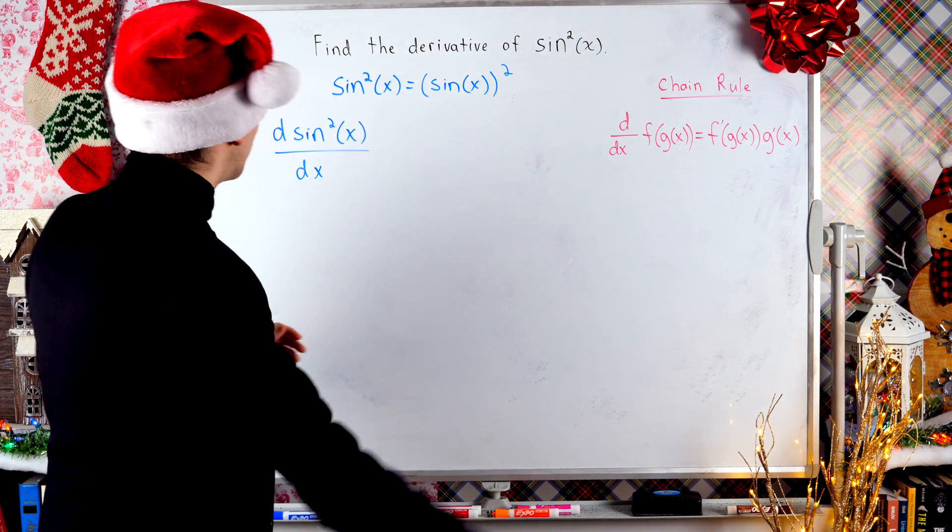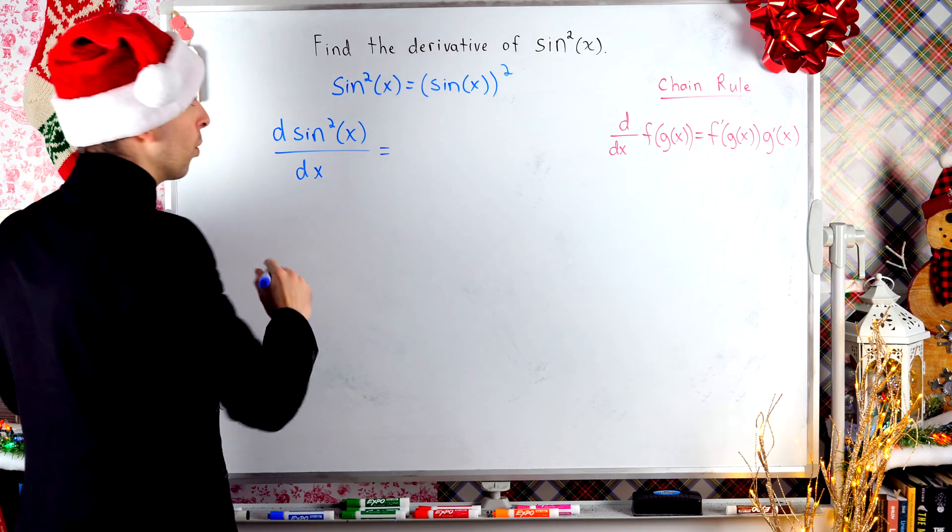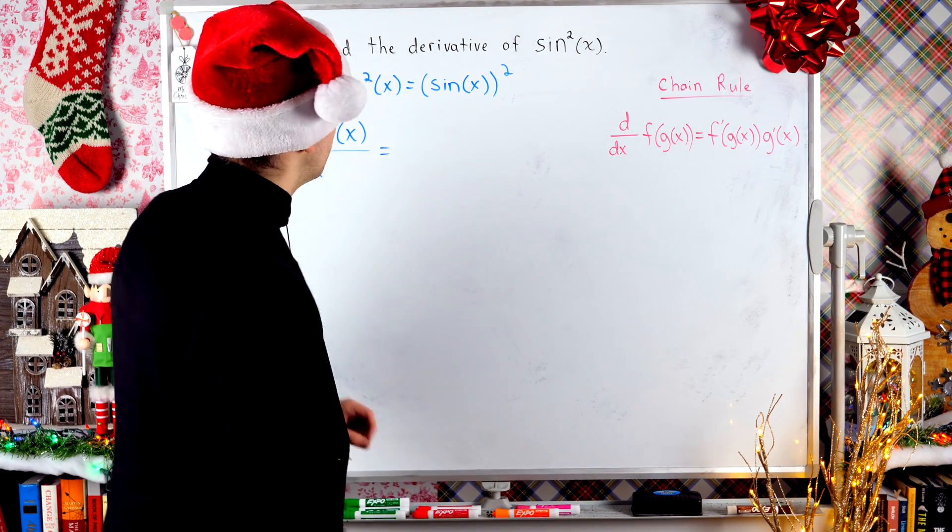All right, here we go. We're going to take the derivative of sine squared of x with respect to x with the chain rule. So what is our outside function here?